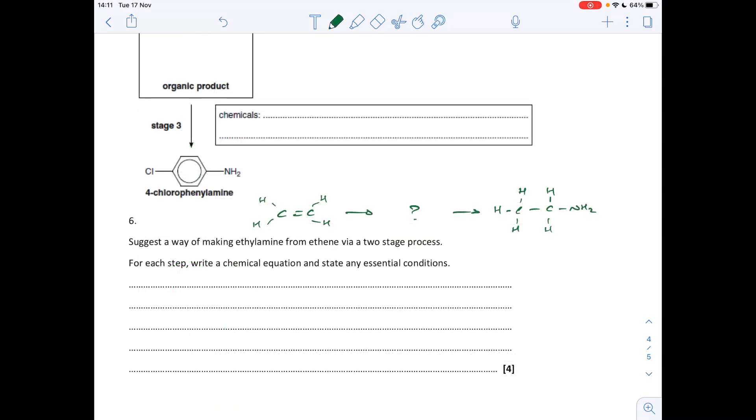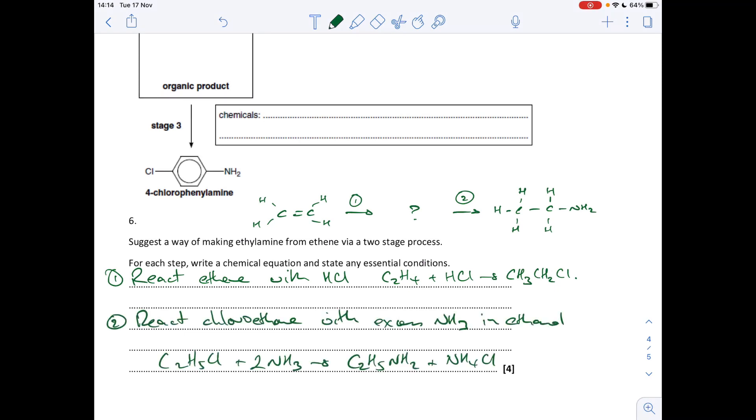Okay, so the final question, we've got to suggest a way of making ethyl amine. So this substance here from ethene via a two-step process. So what do we need to do to ethene first? And then what do we need to do to that to make the ethyl amine? So the first thing you need to do is turn ethene into a halogen or alkyne. So you could react it with something like hydrogen chloride or hydrogen bromide. So I've gone for reaction with hydrogen chloride. No specific conditions for that. So you would just need to react with HCl in the equation. And then to turn the halogen or alkyne into the amine, you would react it with an excess of ammonia, but that needs to be dissolved in ethanol.